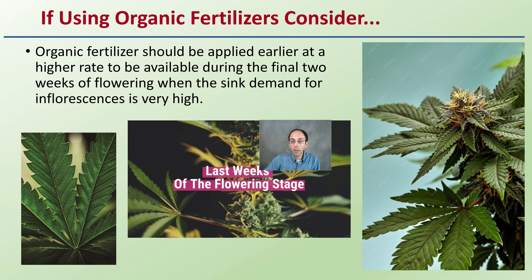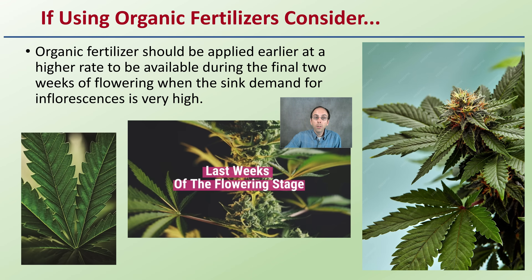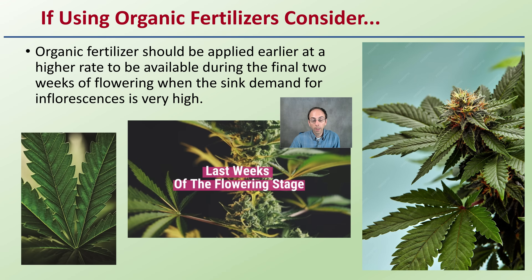If using organic fertilizers, they should be applied earlier and potentially at higher rates than mineral components to be available during those final two weeks of flowering when the sink demand for inflorescence is very high. Because minerals are available so quickly, they meet plant demands right away, while organics need a little breakdown time. Applying a little more — especially during those final two weeks before harvest — could be important to maintain quality yields.